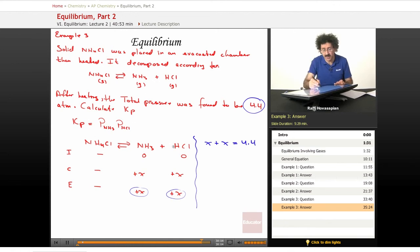Well, that's even because they're forming in a one-to-one ratio. So 2X equals 4.4. X equals 2.2. Well, 2.2, there you go. That's the partial pressure of HCl and the partial pressure of NH3. I have 2.2 and 2.2, not 2.4. Numbers and arithmetic.